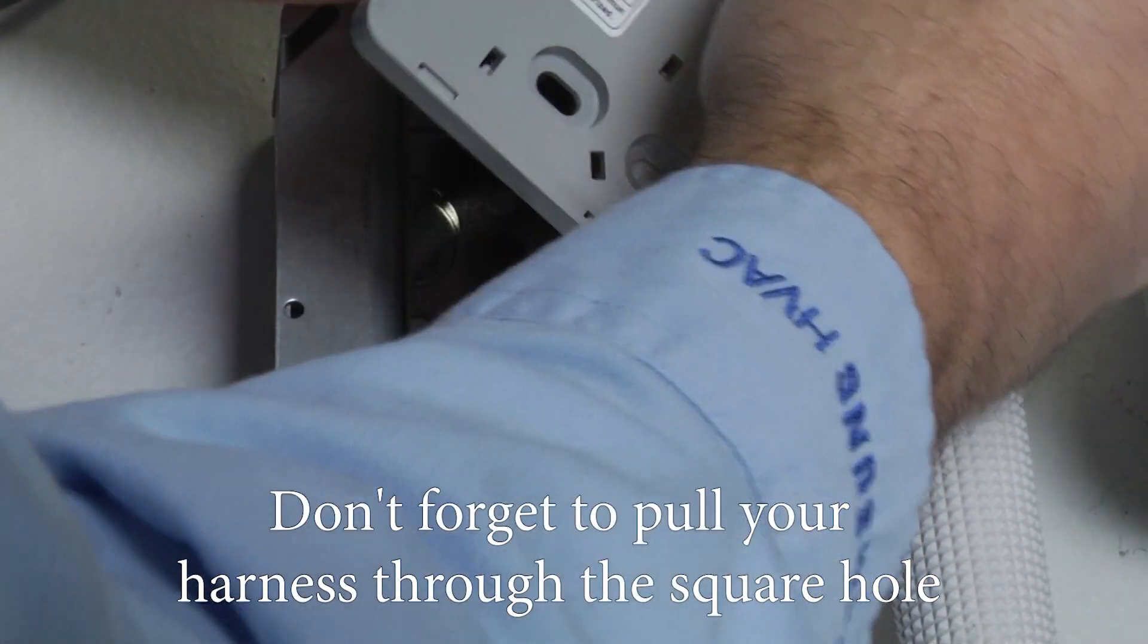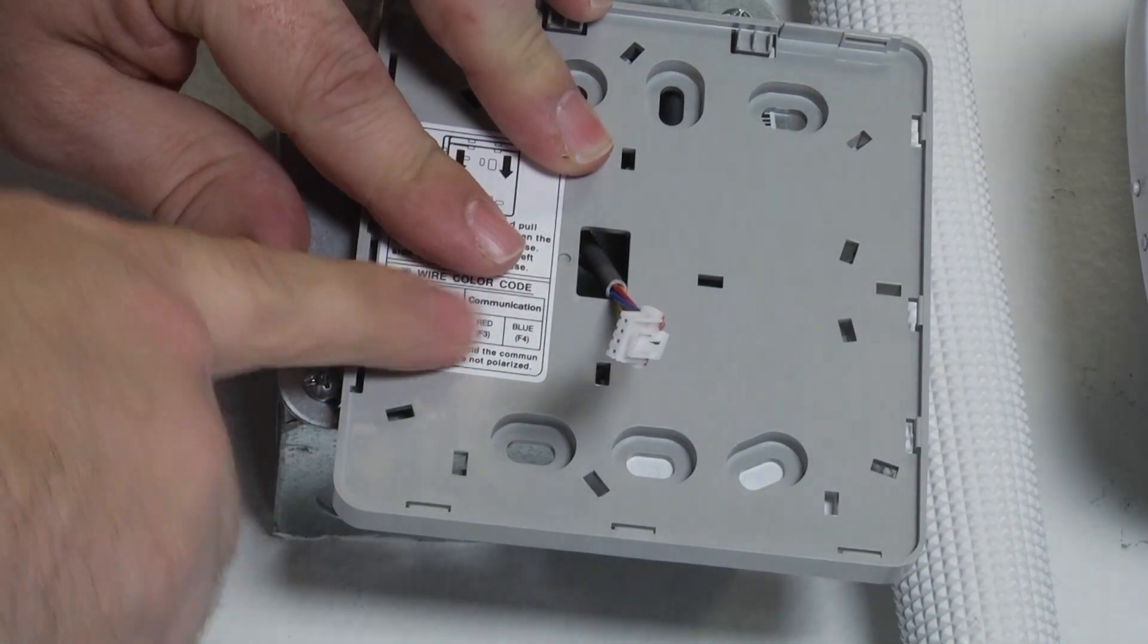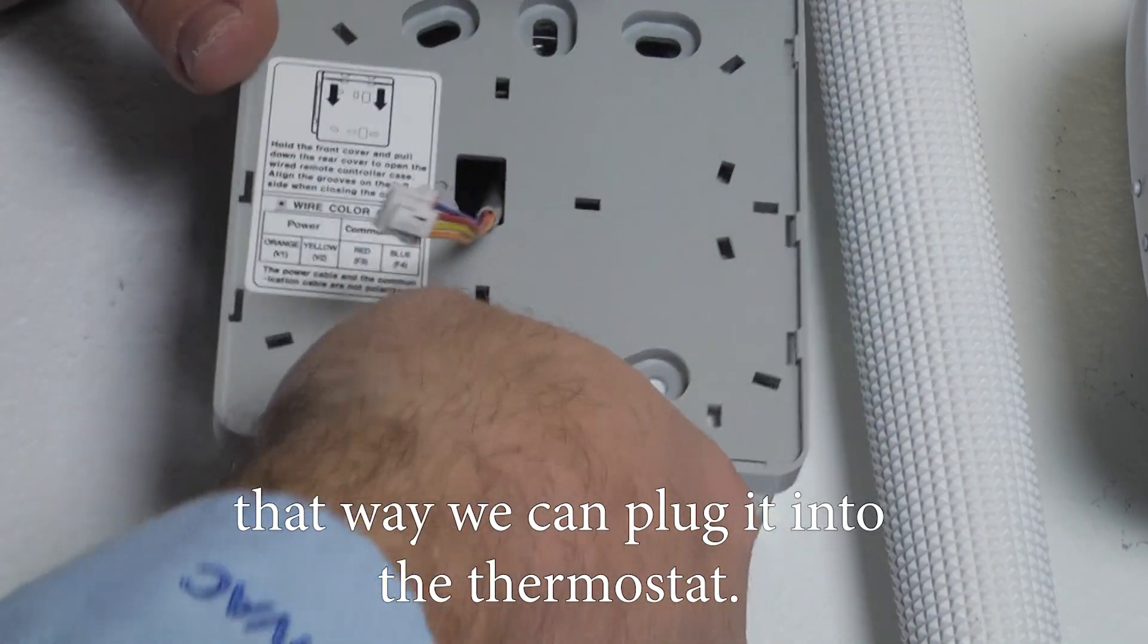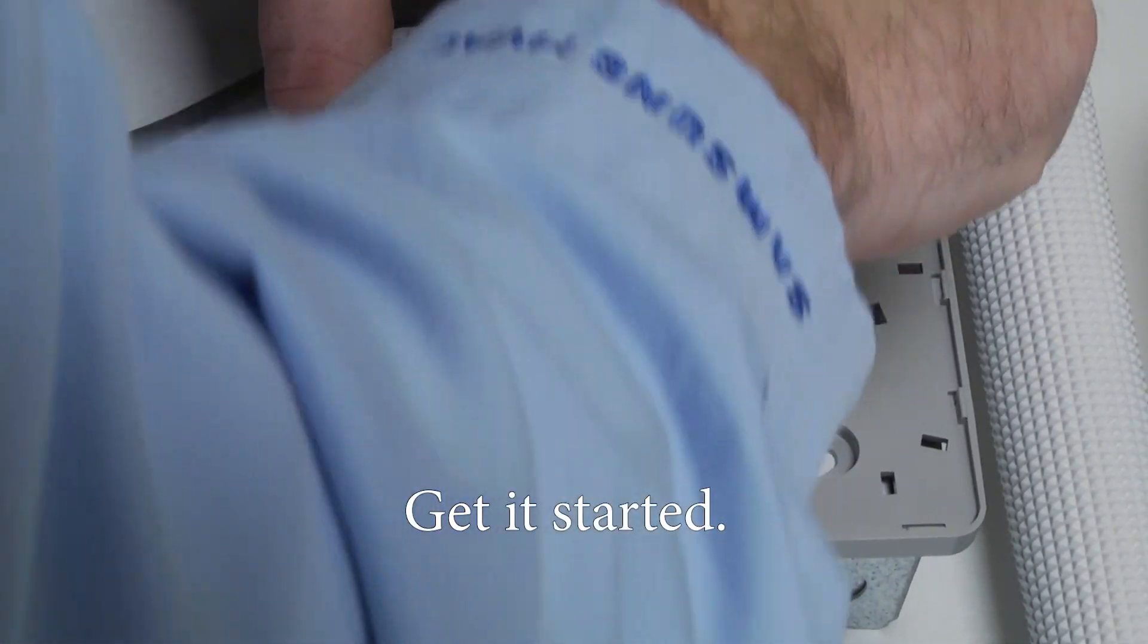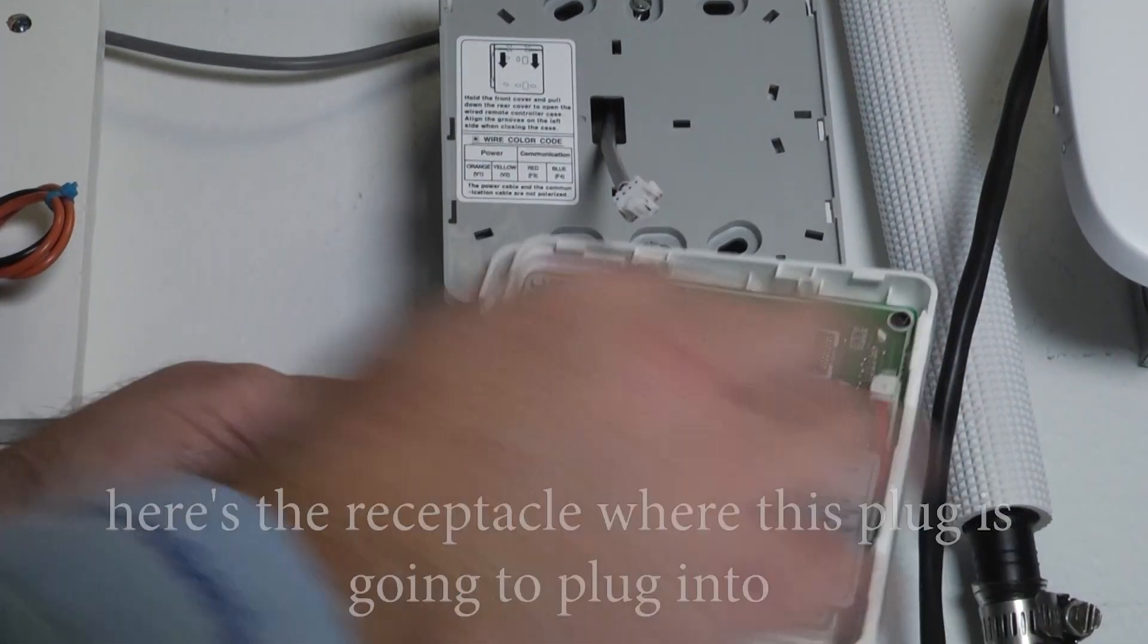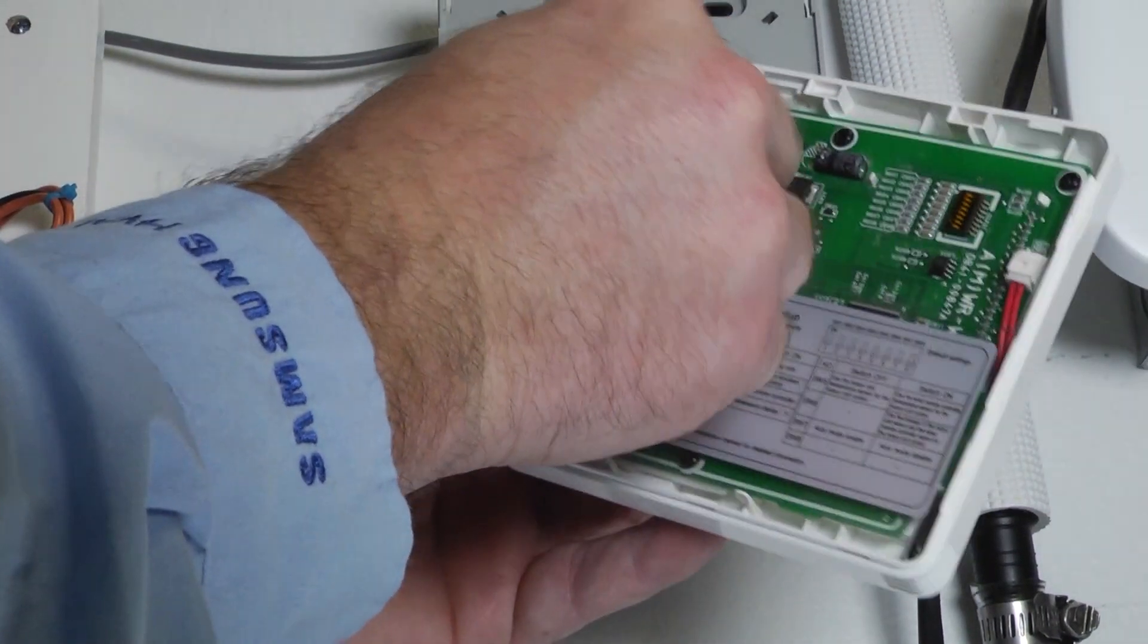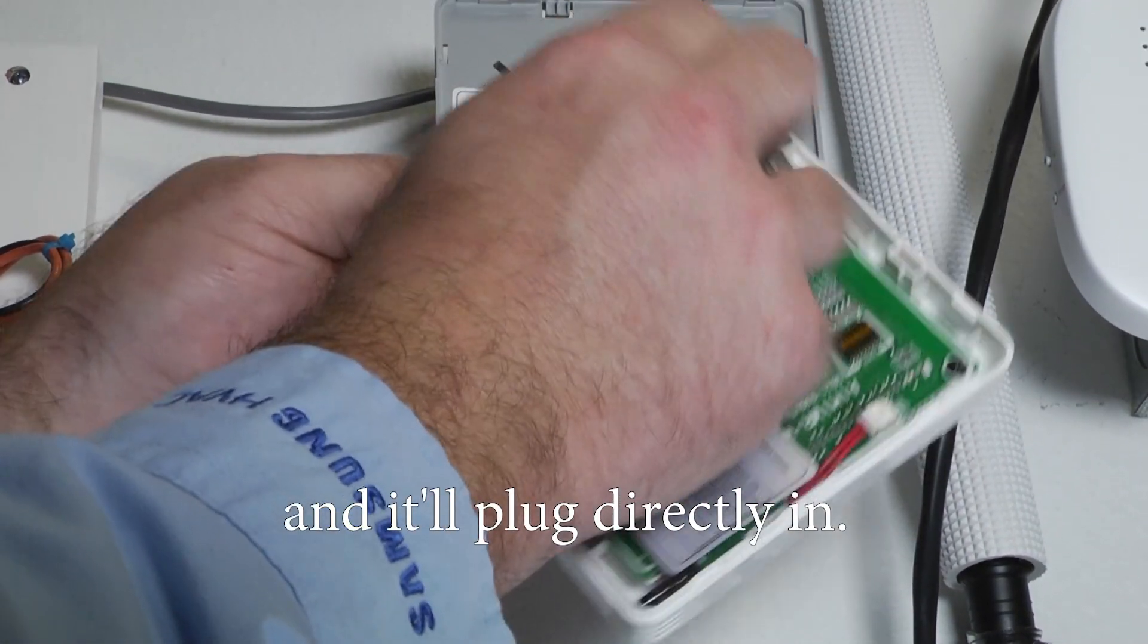Don't forget to pull your harness through the square hole in the middle here. That way we can plug it into the thermostat. All right so it's mounted securely there. This is our thermostat. Here's the receptacle this plug is going to plug into. And it'll plug directly in.